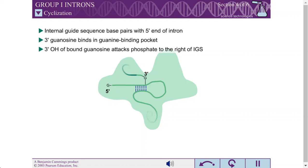The 3' hydroxyl of the bound guanosine attacks a phosphate to the right of the internal guide sequence, using the same transesterification mechanism used to splice the exons. This reaction is called cyclization.